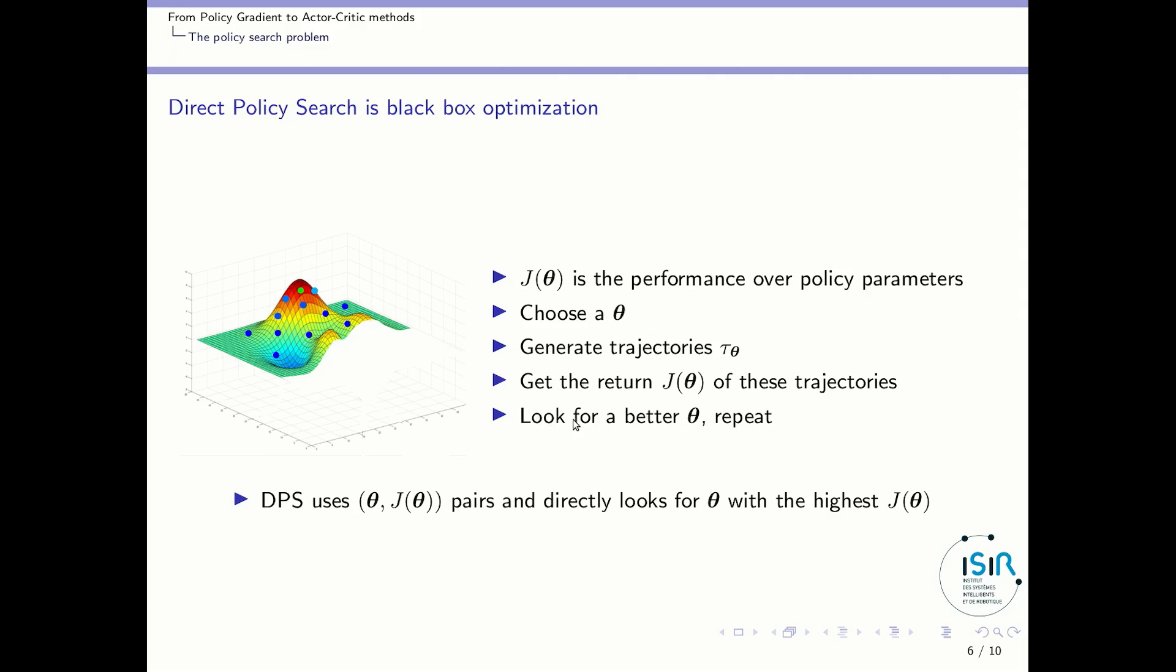So it means that we don't have access to a formal function associating J(θ) to the parameters θ. We have to try the parameters θ to get the feedback about their performance. So direct policy search uses pairs θ, J(θ) and directly look for θ with a higher J(θ).